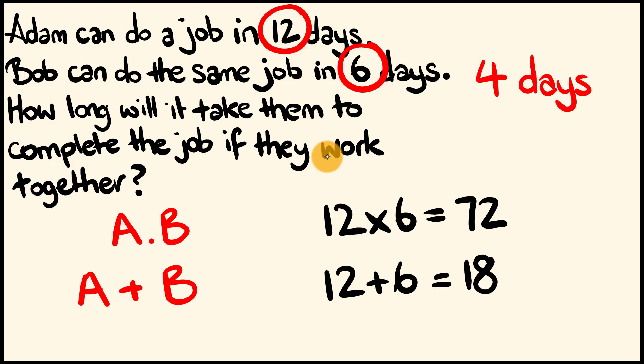Finally, to get our answer, we're going to get our first result and divide it by the second result. That is to say, 72 divided by 18, that is equal to 4 days. All together, that's how you can do this really quickly. And like you can see, with a bit of practice, you'll be able to do this easy under 5 seconds.